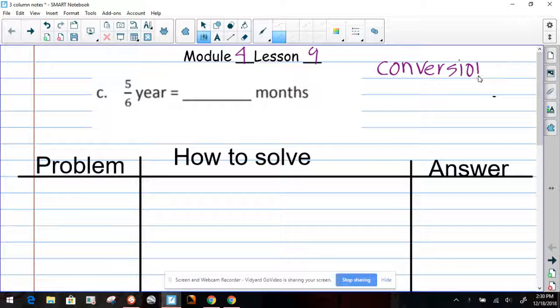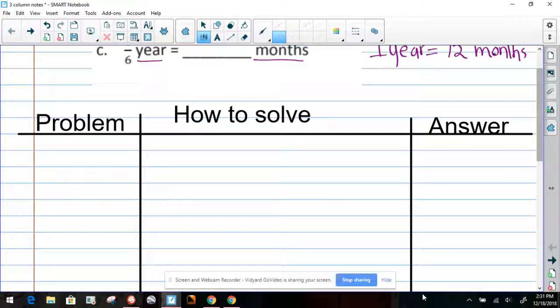The most important thing to know about the conversion is this. One year equals how many months? So then you write it on the side. We all know this is common knowledge, that one year equals 12 months. Knowing this is going to allow us to solve the problem in a very easy way.